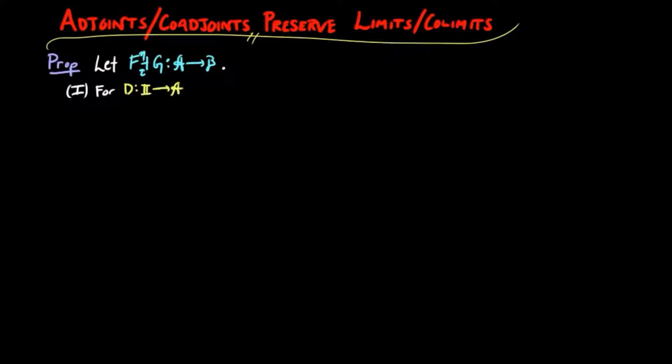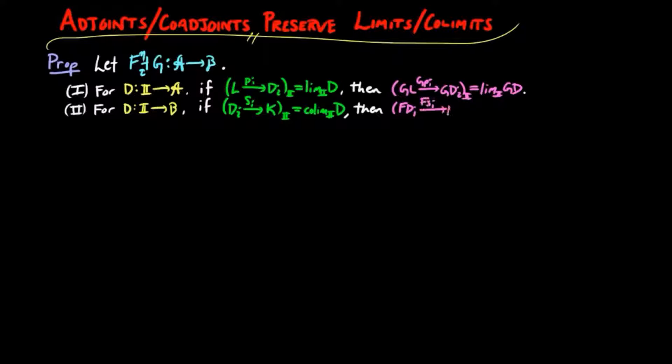Then one: for a diagram D in A, if L,πi is the limit of D, then GL,GπI is the limit of GD. And two: for diagram D in B, if Σ,κ is the co-limit of D, then FΣ,Fκ is the co-limit of FD.